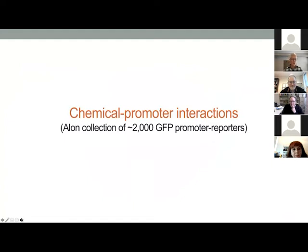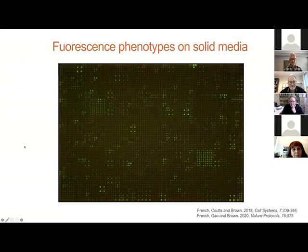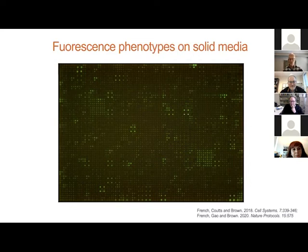I'll finish off with work in my group using the ALONE collection — Uri Alon's construction of about 2,000 strains in which fast-folding GFP has been fused with virtually every promoter unit in E. coli as a way to report on gene expression. We can pin — this is a 6,144 density array of those 2,000 or so clones, each in at least triplicate — and get a lovely plate where we can see the fluorescence of these particular clones grown on solid media, presenting an opportunity to put any chemical we would like in this plate to look at what is the unique and signature response of every promoter in E. coli to a chemical.